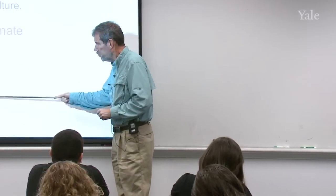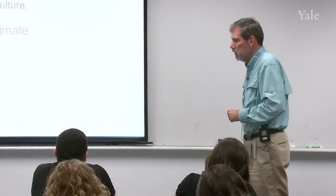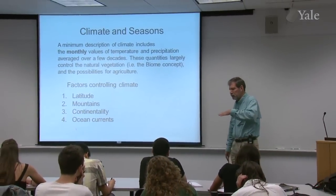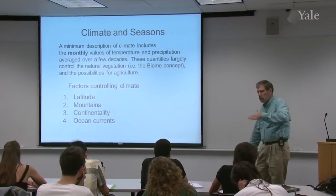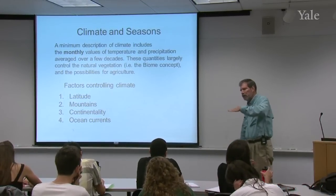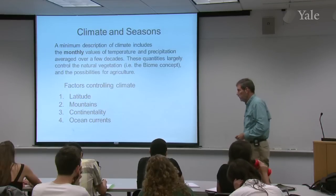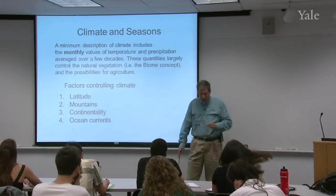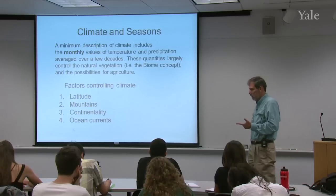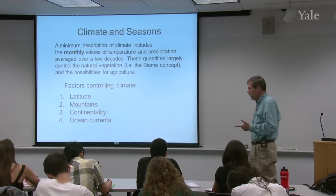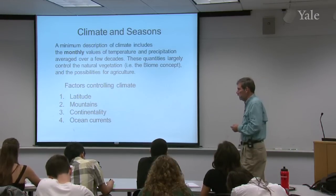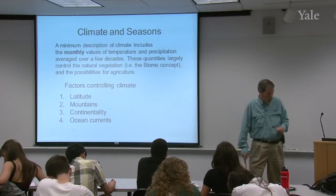The factors that control climate are primarily these: latitude, because of the way the general circulation gives a latitudinal structure to climate — the Hadley cells, the belts of storms, the belts of deserts — so as you go from latitude to latitude you move through different zones. But it's not everything. Mountains play a very big role. Something called continentality, which I'll describe in a minute. And ocean currents also play a role in determining climate. I'll be going through these today.